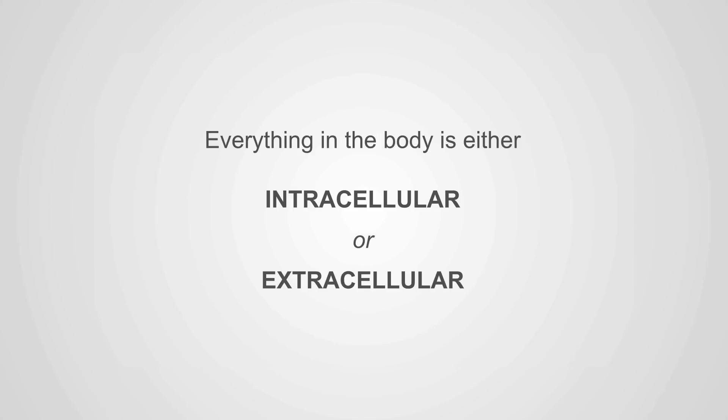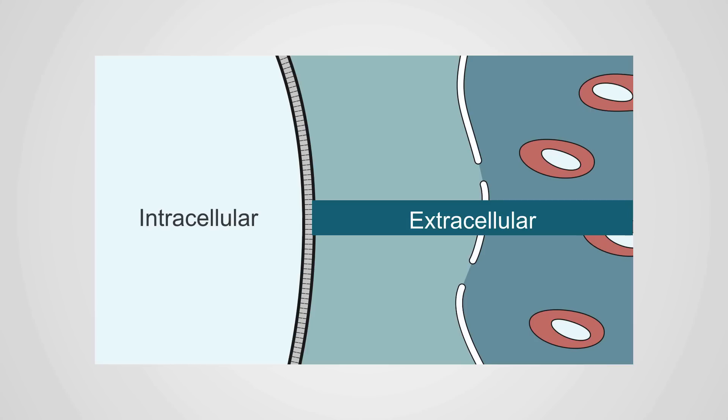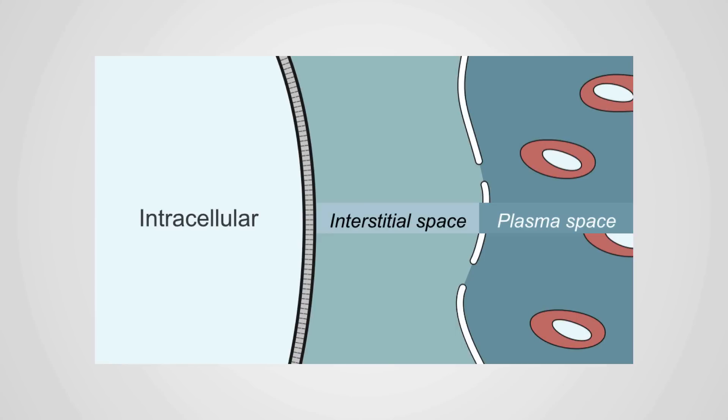Everything in the body is either intracellular or extracellular. These two compartments are divided by the cell wall. The extracellular compartment is further defined into an interstitial space and a plasma space divided by the capillary wall.